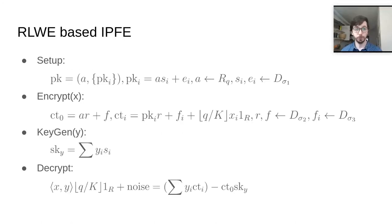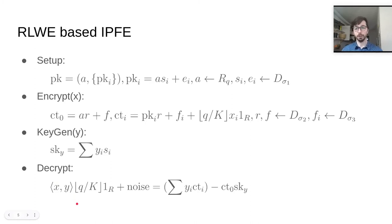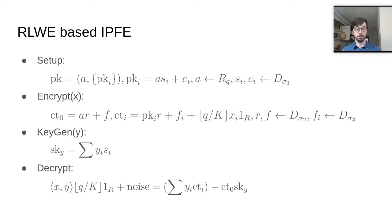An inner product functional encryption scheme should support encrypting vectors, say X in our case, and deriving functional encryption keys based on some other vectors, say Y, that enable you to decrypt an inner product of X and Y. The idea of how a RLWE-based inner product functional encryption scheme is constructed is similar to other existing inner product functional encryption schemes, and can also be seen as a natural generalization of a RLWE-based public key encryption.